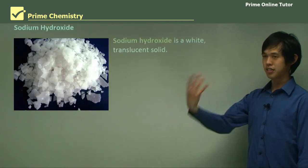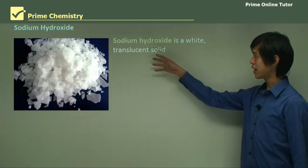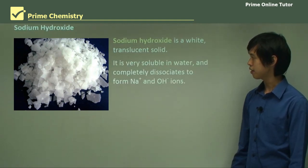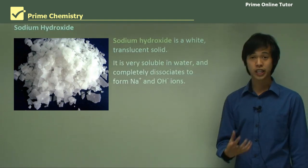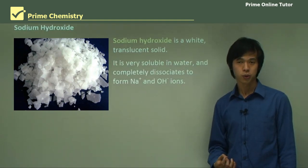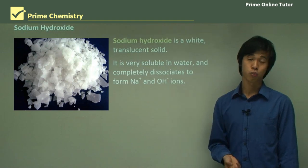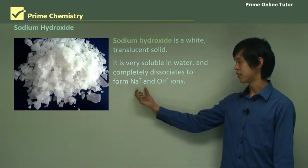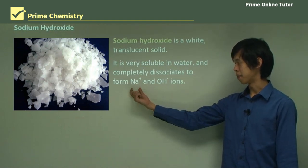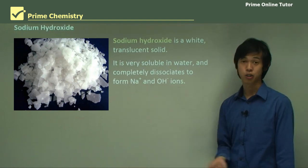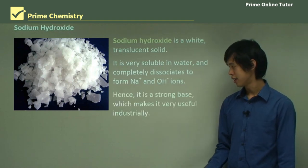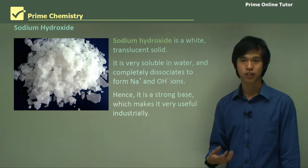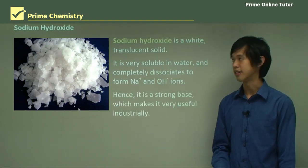So first, what is sodium hydroxide? It's a white translucent solid, as you can see here. It's really, really soluble in water because it's part of a group 1 metal compound, and it readily dissociates to form Na⁺ and OH⁻. This makes it a really strong base, and so we use it very frequently in industry.